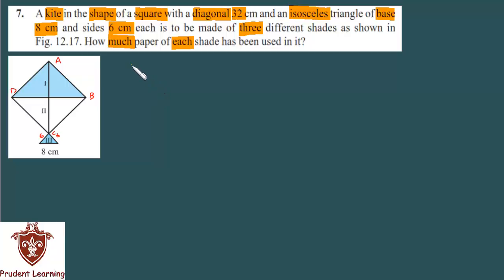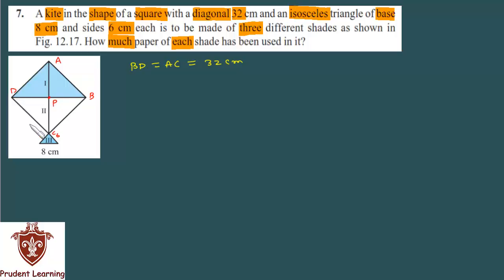This means BD is equal to AC. Both BD and AC are equal, and how much is given in the question? 32 cm is given — that is the diagonal length of the square. The two diagonals intersect at a point of intersection, which we call P. The diagonals bisect each other in a square.